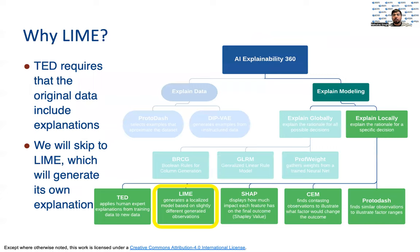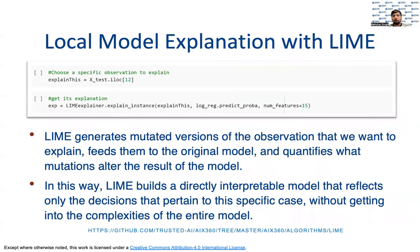Out of all the local explainer tools available to us, we skip TED because TED requires that the original data have explanations attached with it. Since we need to generate our own explanations, we start with LIME. LIME stands for Local Interpretable Model-Agnostic Explanation. LIME works by first creating slightly mutated versions of the observation that we want to explain. It then feeds these variations to the original model and observes how the model performs with the mutated data. In this way, LIME builds a directly interpretable mini-model that reflects only the decisions that pertain to any given specific case, without getting into the complexities of the entire model.